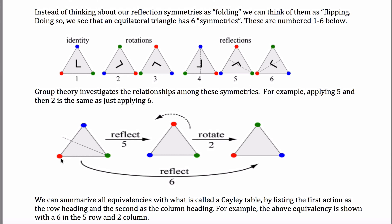Reflecting across that line will move the blue dot here and the red dot up here, and leave the green alone, which is exactly what's pictured. Then after you do a 5, you take this shape and do a 2. A 2 was made by rotating the shape counter-clockwise — it took the green vertex up here, the blue one down here, and the red over here.